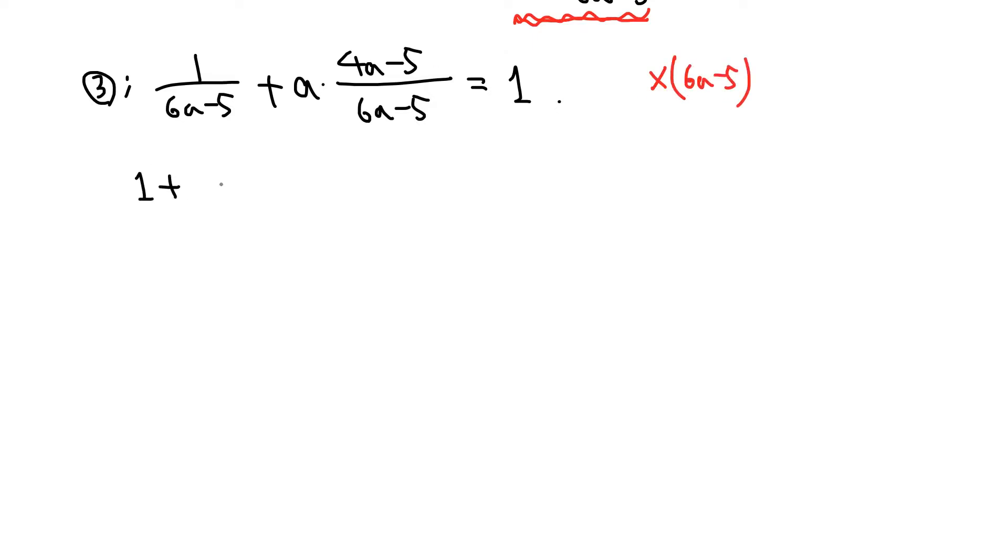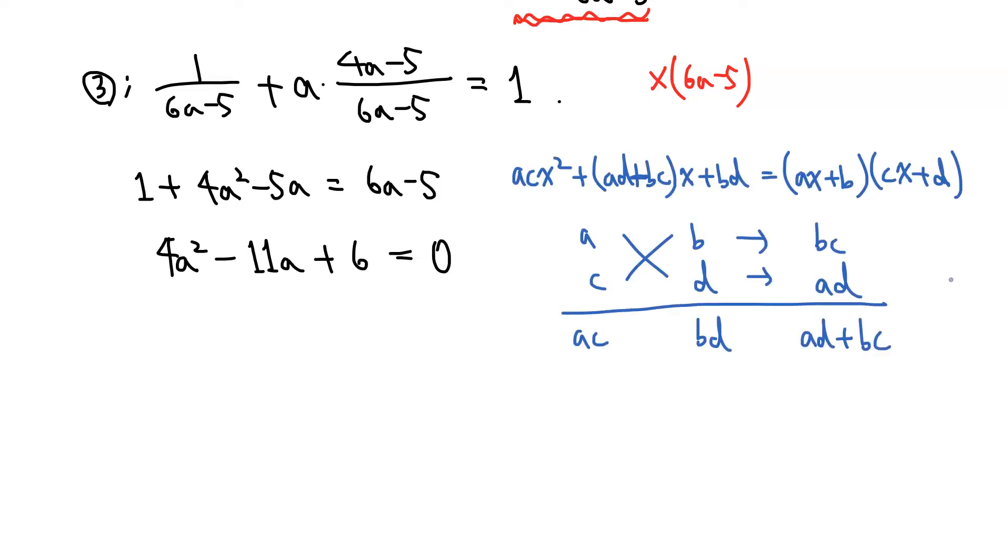Then we have 1 plus 4A squared minus 5A equals 6A minus 5. So we have 4A squared minus 11A plus 6 equals 0. And let us factor the left-hand side using this factorization formula.